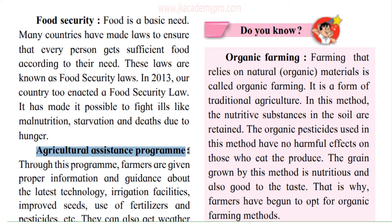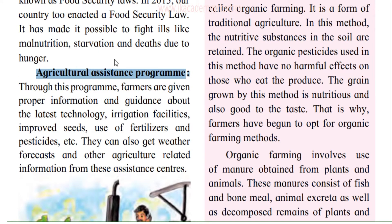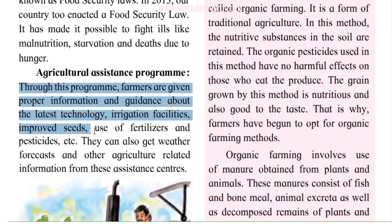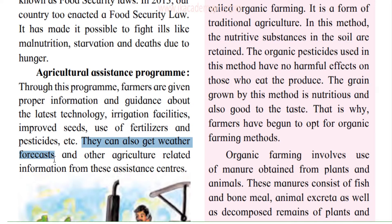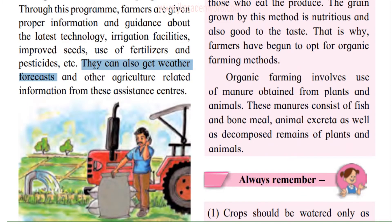Agricultural assistant programs — through these programs, farmers are given proper information and guidance about the latest technology, irrigation facilities, improved seeds, use of fertilizers and pesticides. There are certain associations where they will help farmers get all this information. Farmers can also get weather forecasts — whether it will rain a lot, not rain at all, or be sufficient rain, and when it will rain. Accordingly, farmers can decide about their crops and get other agricultural-related information from these assistance centers.